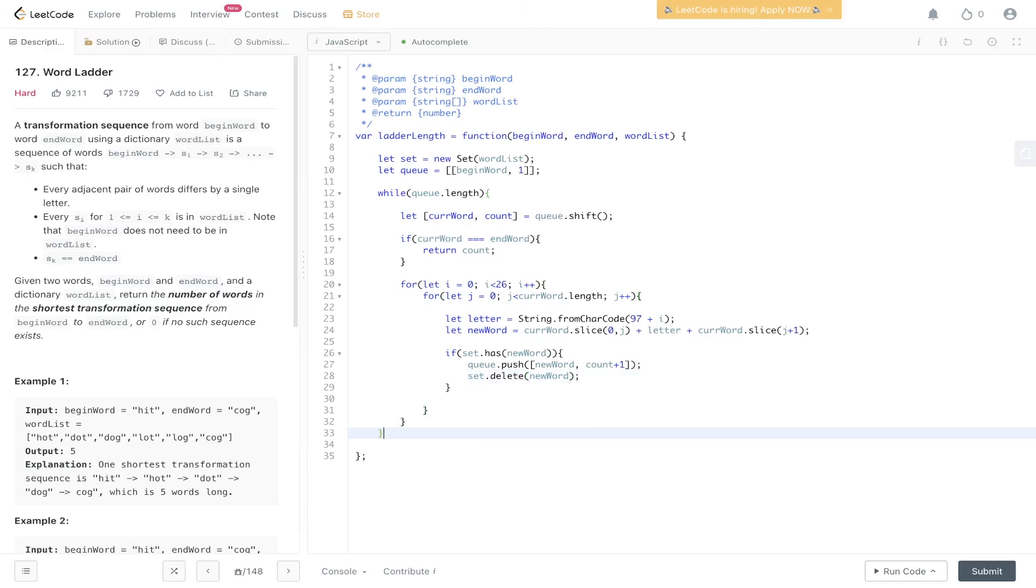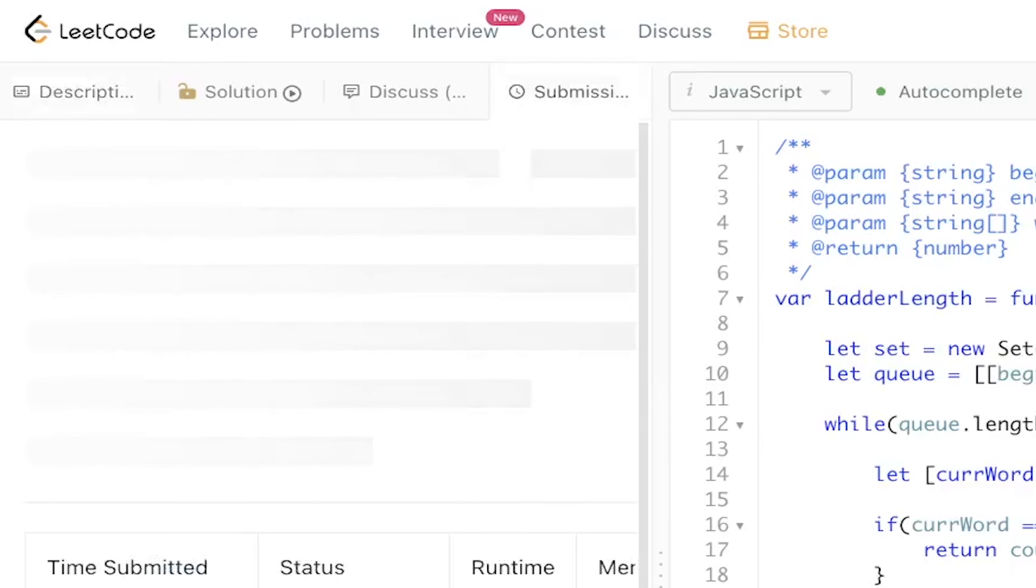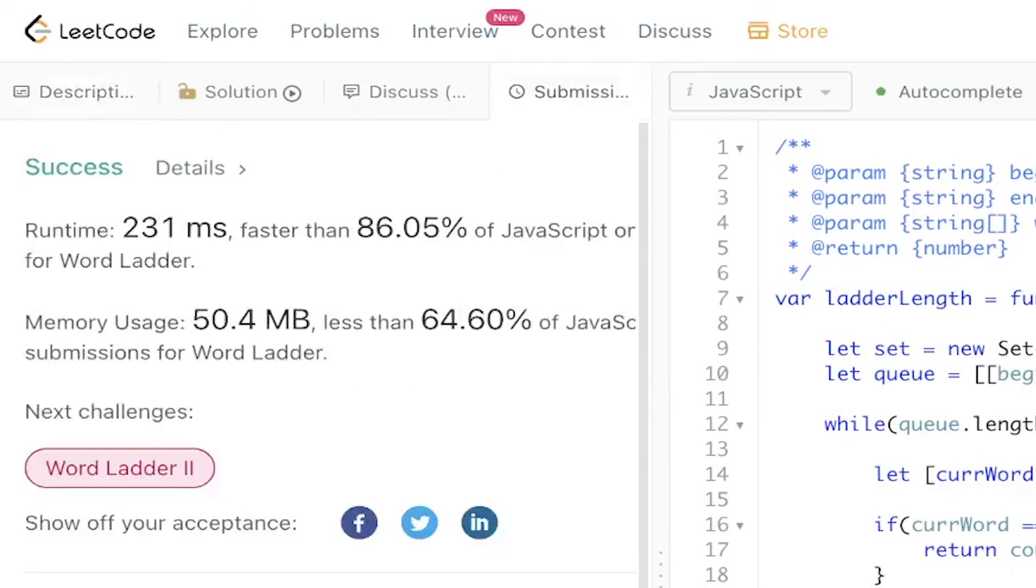new word and then in the case where we don't find a path or a sequence from begin word to end word we just return 0. Let's give that a run. Submit it. And there you go.